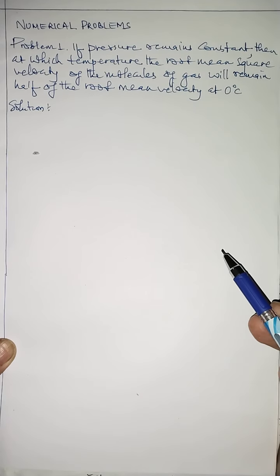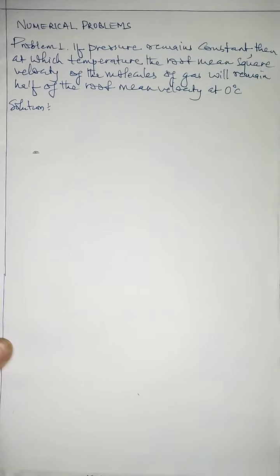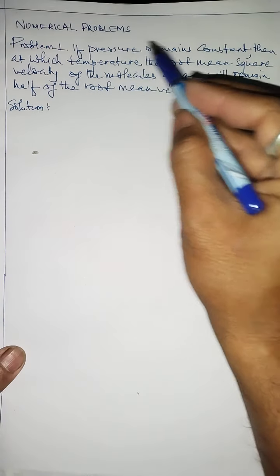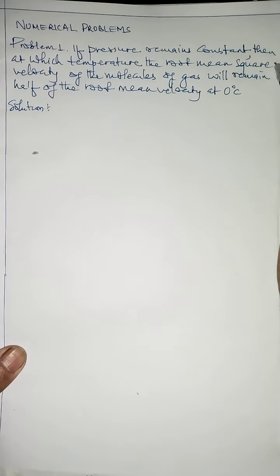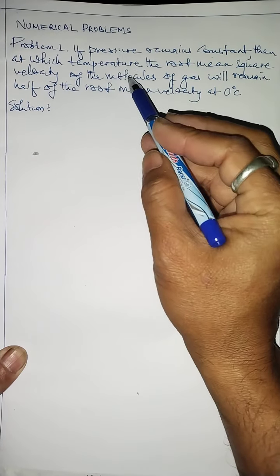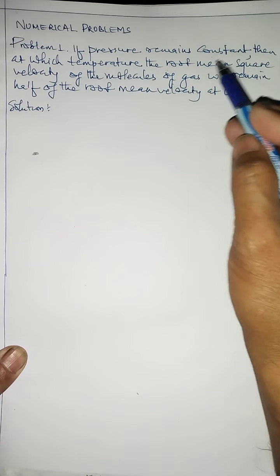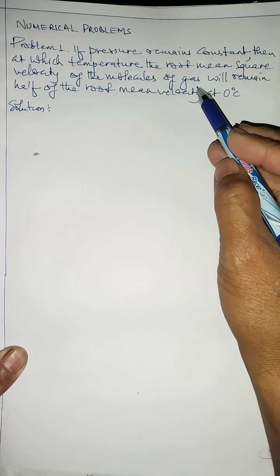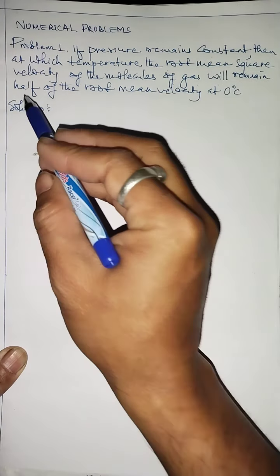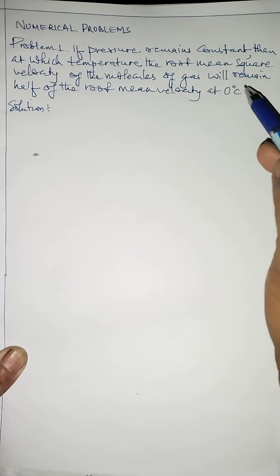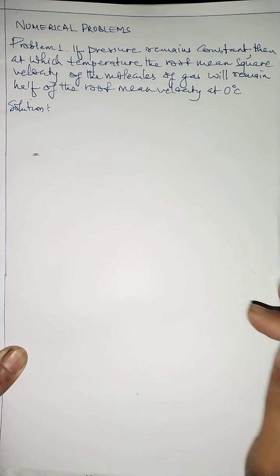Problem number one says: if pressure remains constant, at what temperature will the root mean square velocity of the molecules of a gas remain half of the root mean square velocity at zero degrees Celsius?